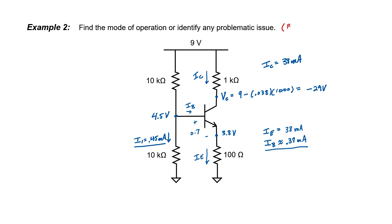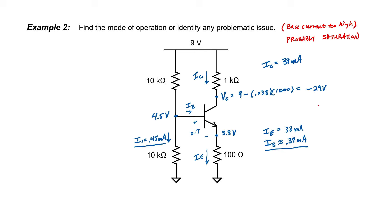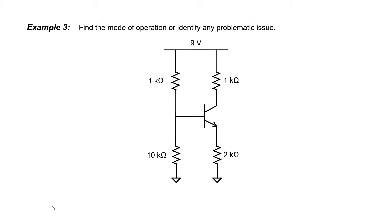Because the base current was not negligible, I'm not really sure what the base voltage actually is. You see now why it's important for the base current to be negligible — if you can't neglect it when calculating voltages, you might not know what voltage you're going to get. So let's finish up this example by noting the problematic issue: base current too high. In terms of the mode of operation, I can only guess that this transistor is in saturation. The voltage is not really negative 29 volts — it has to be somewhere between zero and nine, probably around three or four volts.